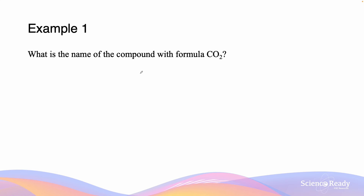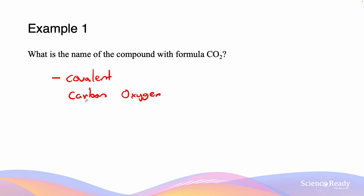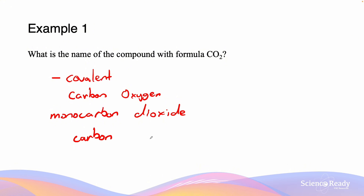Here we can do some example questions. The first question asks: what is the name of a compound with the formula CO2? First, we identify whether this is ionic or covalent. Because the compound consists of only non-metals, we can assume it is a covalent compound. The least electronegative element is carbon, so the name begins with carbon, then oxygen. There is one carbon and two oxygens, so the name becomes monocarbon dioxide. We then omit the mono prefix for the first element, so this compound is called carbon dioxide.